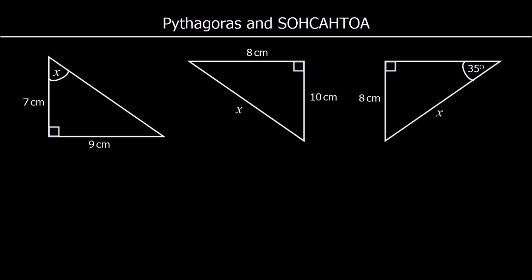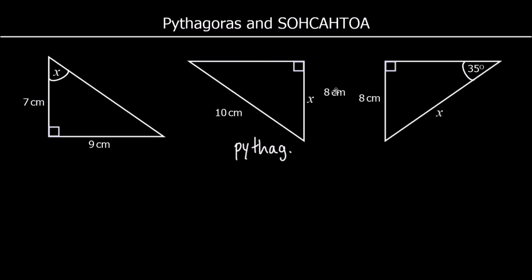Pythagoras just involves the lengths of a right-angled triangle. So the middle triangle here has got no angle in it — it's only lengths, so it will be Pythagoras. We use Pythagoras to find a missing side; it could be the hypotenuse we're working out or it could be one of the shorter sides. So if you've got two sides of a right-angled triangle, you can use Pythagoras to work out the third one.